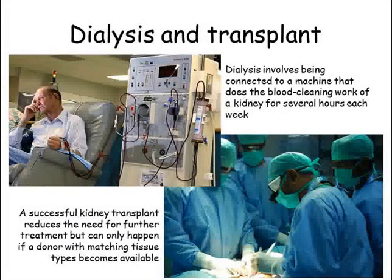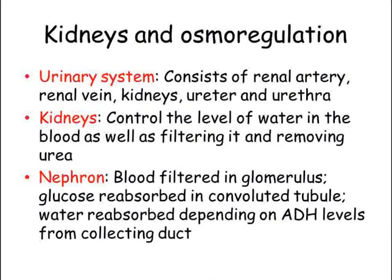An alternative is a kidney transplant, but this relies on a kidney with matching tissue types being available. Water levels in the blood are controlled by the urinary system, which also works to filter the blood and remove urea from it. The urinary system consists of the renal artery and vein, kidneys, ureters from each kidney leading to a bladder, and the urethra leaving the bladder.